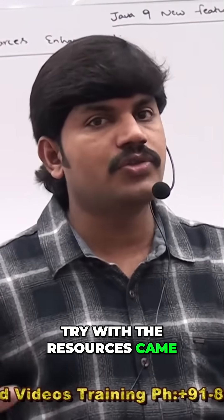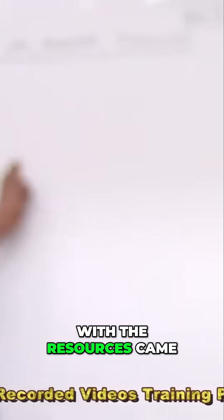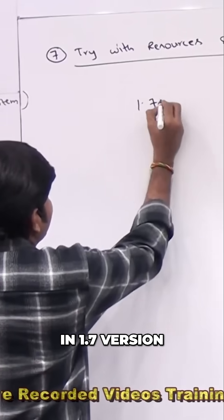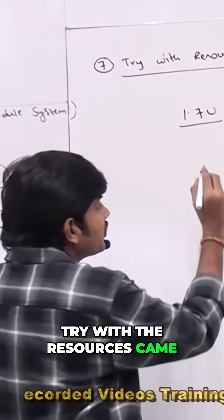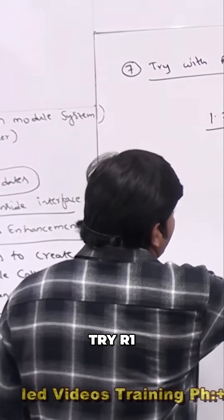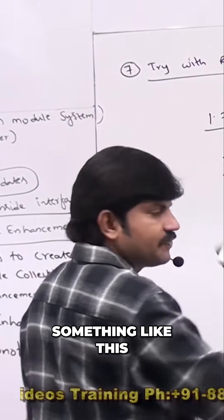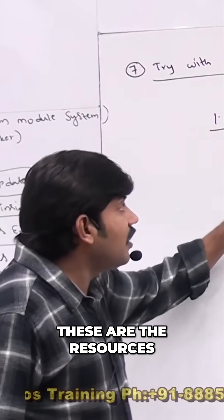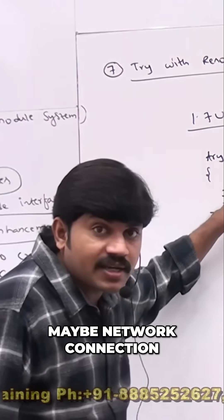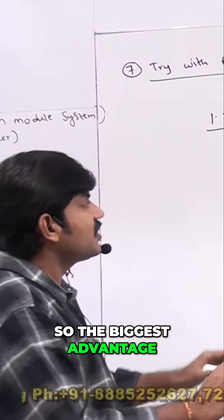To overcome that and have resources closed automatically, try-with-resources was introduced in Java 1.7. The syntax is: try with r1, r2 — these resources could be a database connection, network connection, file writer, or file reader — any resource.